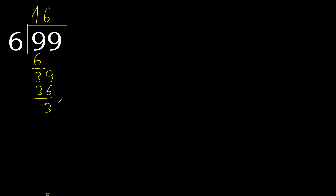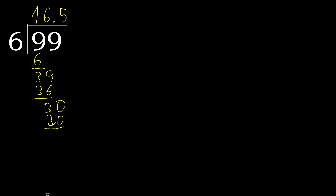There is no next digit, so we complete with 0 here — point, 0. Now bring down the 0 to get 30. 6 multiplied by 5 is 30. 30 minus 30 is 0.